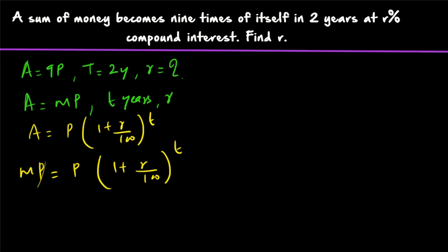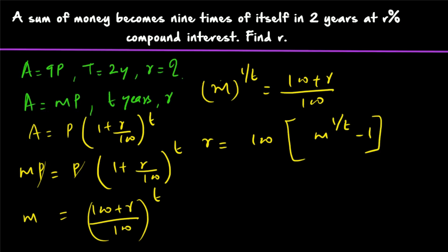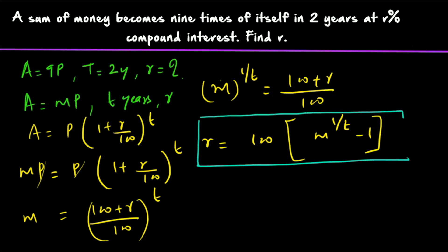P and P cancel out, giving us M = (100 + R)/100, the whole raised to T. From there we are trying to find out R. Since there is a power of T, we take the Tth root on both sides — both the left hand side and the right hand side. So M^(1/T) = (100 + R)/100. From there, R = 100 × (M^(1/T) − 1). This will be our common shortcut formula.